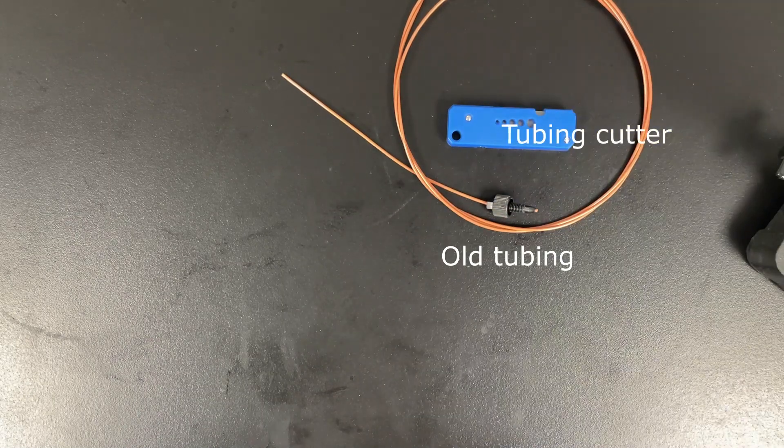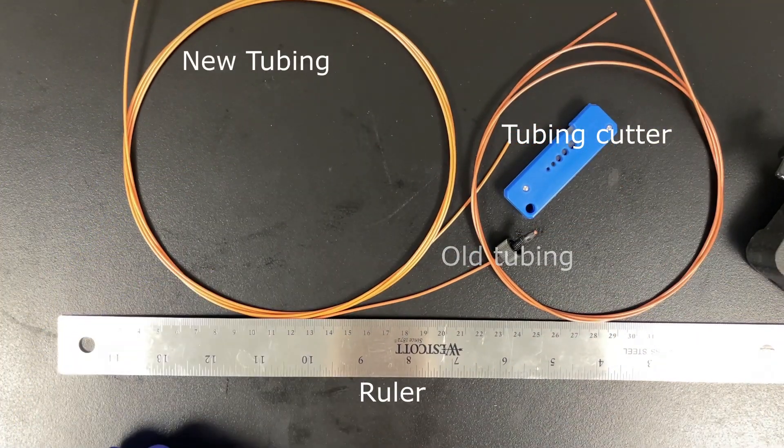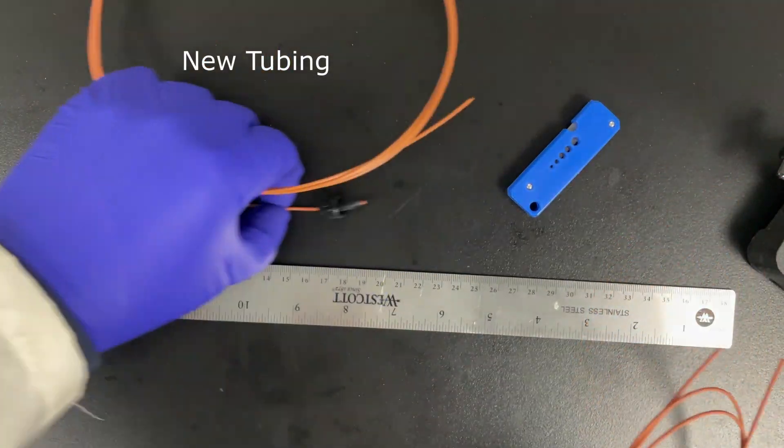Now, what you're going to need is the old tubing, a tubing cutter, a ruler, and a length of new tubing.